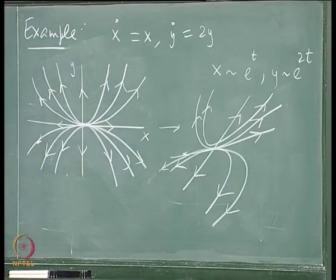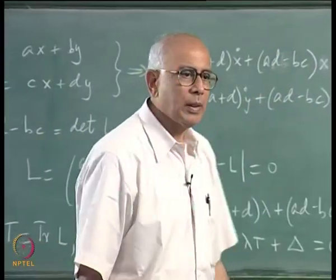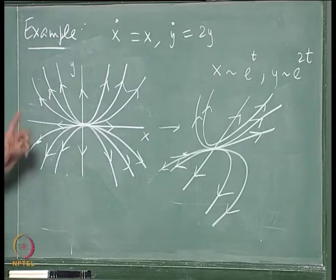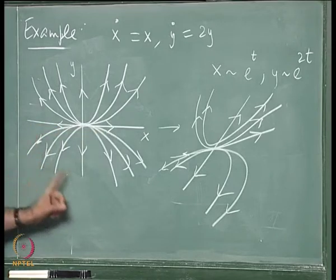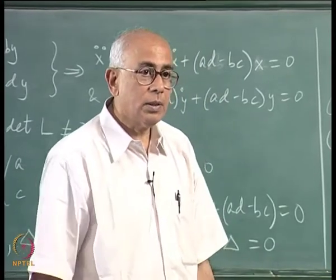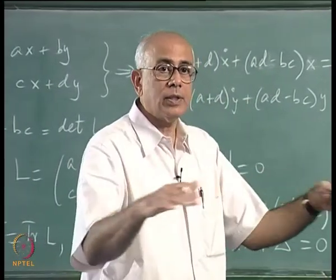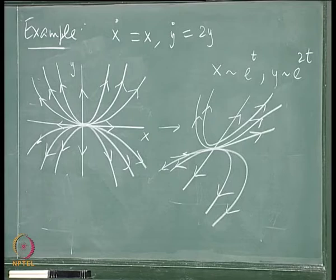Therefore, we assert that both eigenvalues positive corresponds to an unstable node. There are two different kinds of nodes in pictures: the generic case where the two roots are unequal, which typically has a common tangent to all trajectories except for a single exceptional direction; and the earlier star pattern with equal eigenvalues, which shows straight lines emanating in all directions with no common tangent and no exceptional direction.